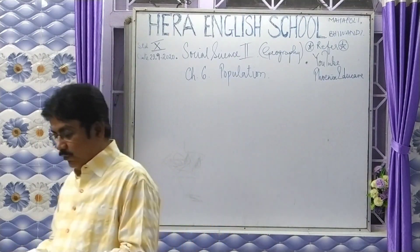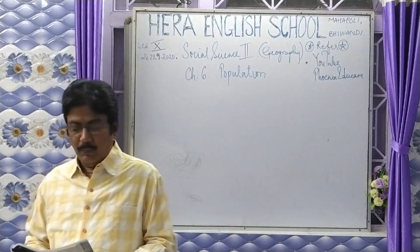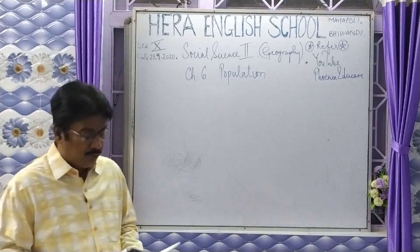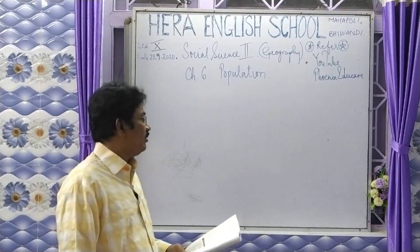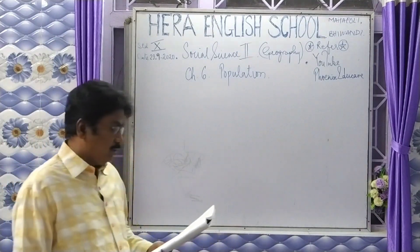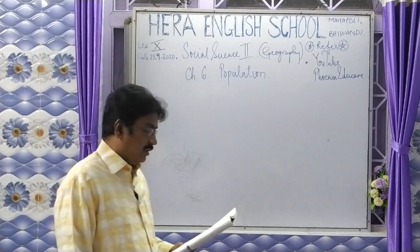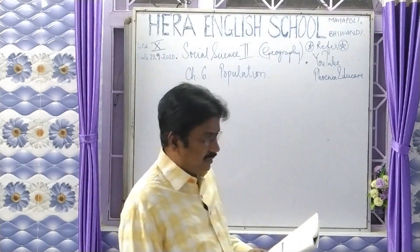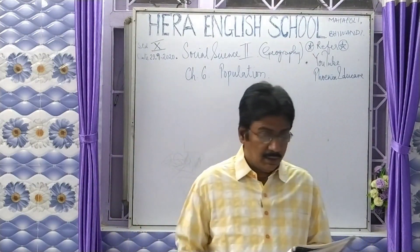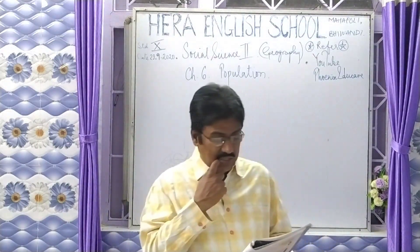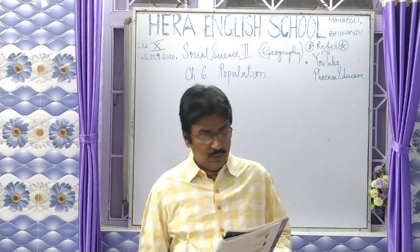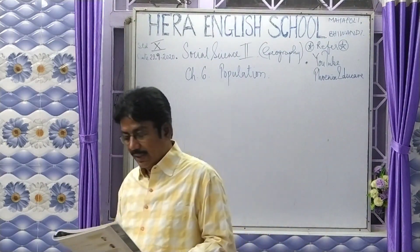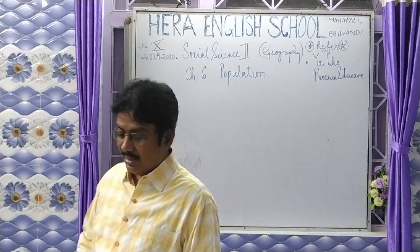Today we are looking at population growth of both countries according to various censuses: 1960, 70, 80, 90, and 2000 for Brazil. But in India it is 1961, 71, 81, 91, 2001, and 2011.